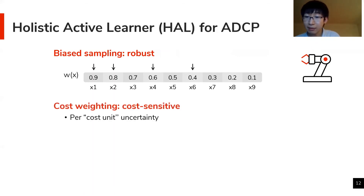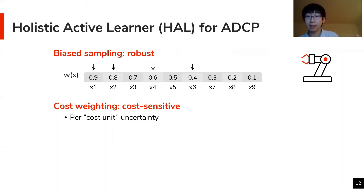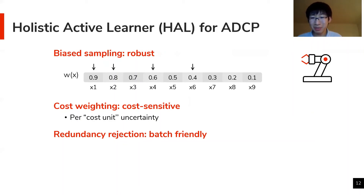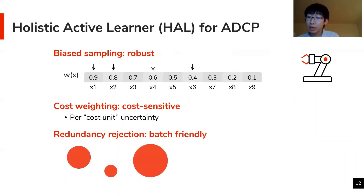Second, we apply a concept called return on investment to achieve cost sensitivity, which essentially divides the uncertainty by the cost estimation to get a per-cost-unit uncertainty, and we use that as w(x). Finally, there can be redundancy in a batch of labels acquired together — for example, queries with similar inputs and similar runtimes may have similar labels. So we use a clustering-based rejection technique where we group similar data points into clusters and set a submodular threshold to get labels from each cluster based on cluster size and uncertainty.